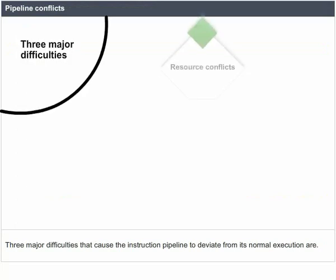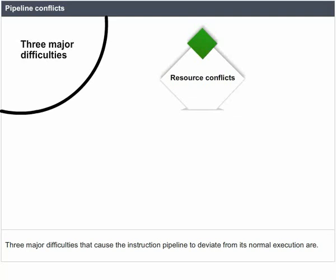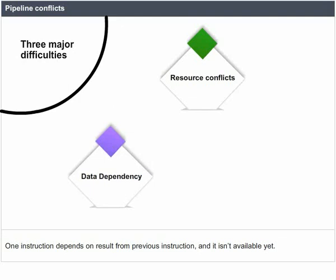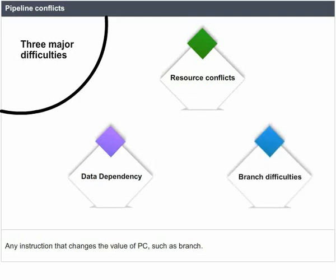Pipeline Conflicts: Three major difficulties that cause the instruction pipeline to deviate from normal execution are: (1) Resource Conflicts — an attempt to access memory by two segments at the same time, which can be resolved by using separate instruction and data memories; (2) Data Dependency — one instruction depends on the result of a previous instruction that isn't yet available; and (3) Branch Difficulties — any instruction that changes the value of the PC, such as a branch instruction.